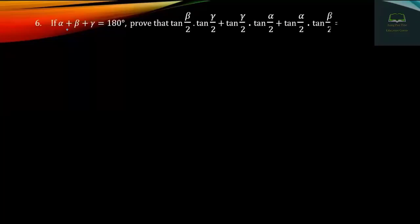Question number 6: If α + β + γ = 180 degrees, prove that tan(β/2)·tan(γ/2) + tan(γ/2)·tan(α/2) + tan(α/2)·tan(β/2) equals 1.